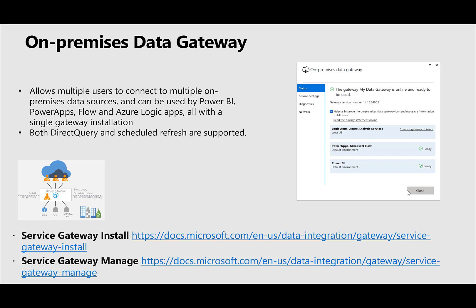It supports both direct query and import mode scheduling for refresh. To install the gateway, you need to get a Windows VM in the same VNet as where SAP HANA is. Within it, you install the SAP HANA ODBC driver inside the VM, and then you install the on-premise data gateway inside the VM. The installation information is linked here. Once you install the gateway, you need to go to the Power BI service and configure that service to connect to the data gateway.